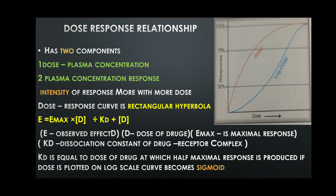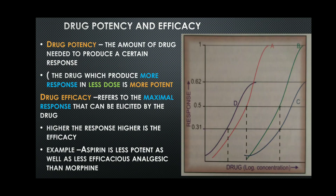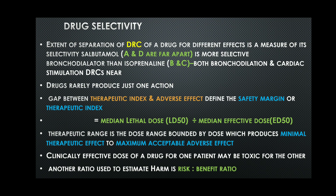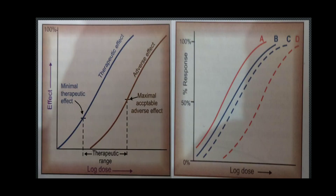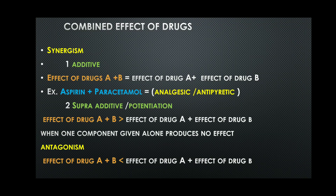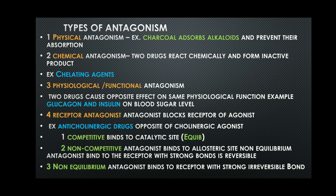For a quick recap: we covered dose-response relationship, drug potency and efficacy, drug selectivity, therapeutic index, safety margin, therapeutic range, and what happens when drugs are combined — synergism and antagonism. Keep studying, watch the other videos, and goodbye!